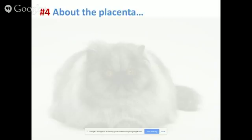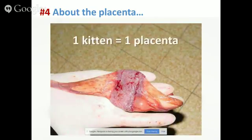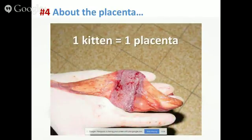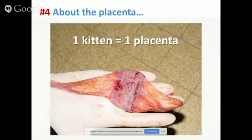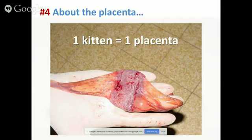The last thing concerns the placenta. Expulsion of the placenta is stage three of parturition. Placentas should be expelled within 10 minutes following expulsion of a kitten — sometimes up to 30 minutes, but there are rules to keep in mind. One kitten equals one placenta. Sometimes placentas can merge during gestation so you get one placenta for two kittens, but this is really uncommon. It's important to verify this count: if one placenta is missing, that tells you something is retained.